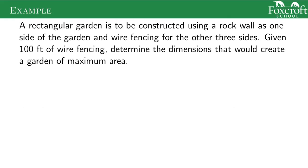Here's an example. A rectangular garden is to be constructed using a rock wall as one side of the garden and wire fencing for the other three sides. If you're given 100 feet of wire fencing, determine the dimensions that would create the garden of maximum area. You see this word 'maximum' — we're going to find the biggest garden possible, we're looking for an absolute extrema.